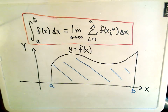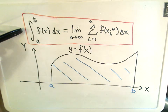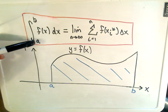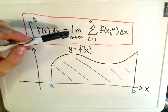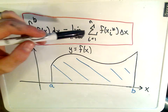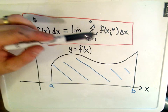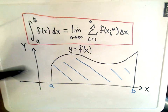In this video I want to talk about the definition of the definite integral. The definition says that the integral from a to b of f of x dx is equal to the limit as n goes to infinity of the summation from 1 to n of f of x sub i star times delta x.